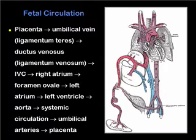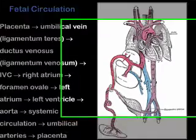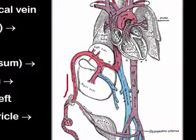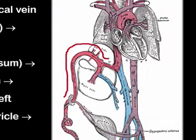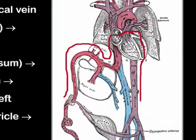The normal fetal circulation begins at the umbilical vein, then blood enters the ductus venosus, the inferior vena cava, the right atrium, crosses the patent foramen ovale into the left atrium, into the left ventricle, into the systemic circulation via the aorta, and then back to the placenta via the umbilical arteries.